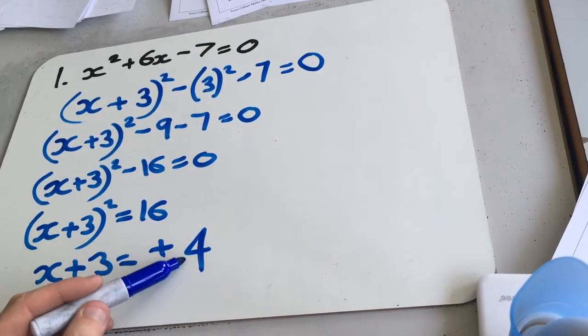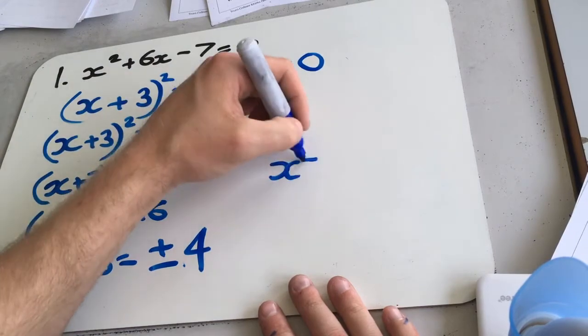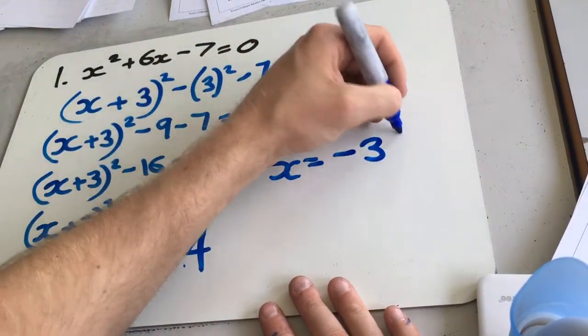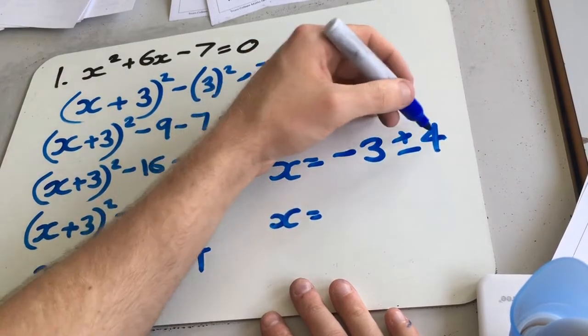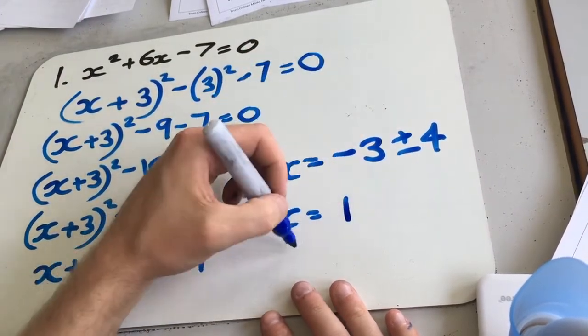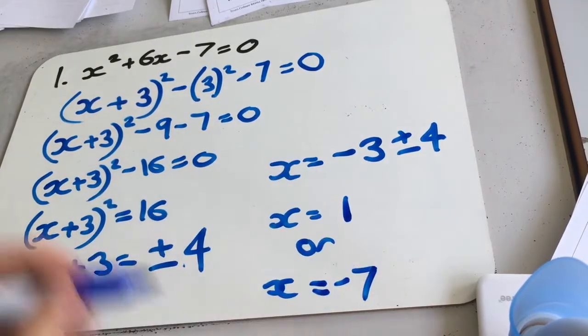Because when we square root something, we've got to have positive or negative. And now we're going to subtract the 3. So we've got x equals minus 3 plus or minus 4. So x equals minus 3 plus 4 would be 1, or minus 3 minus 4 is minus 7.